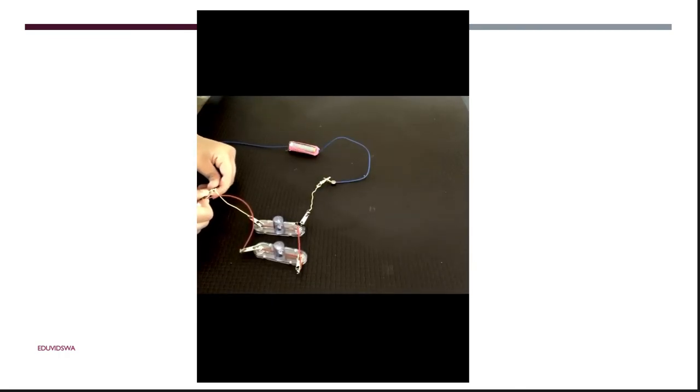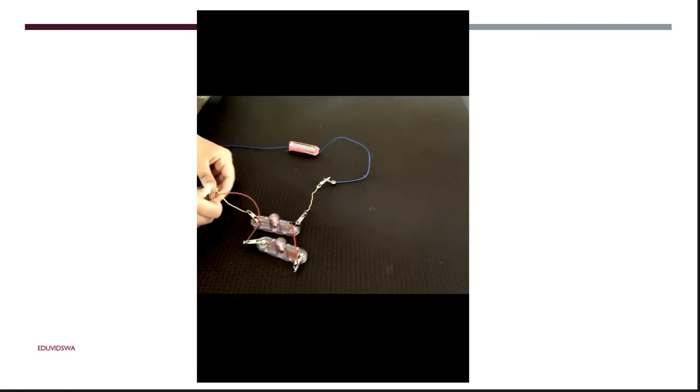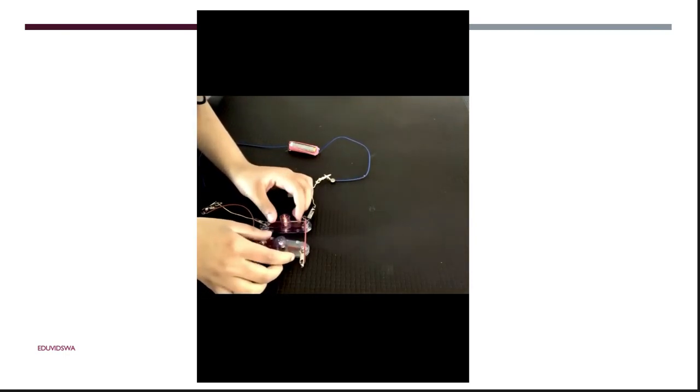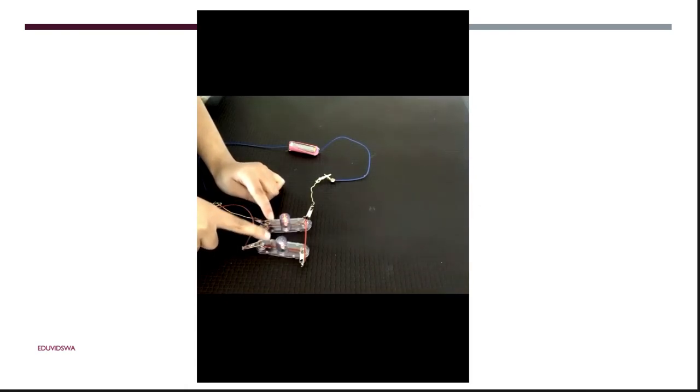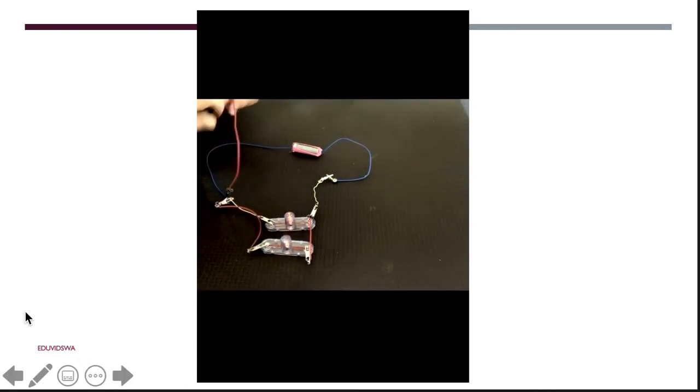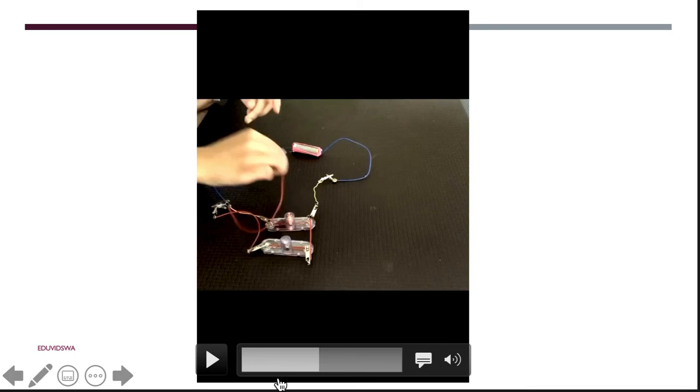I attached wires so that both light bulbs were part of the circuit. And you can see that the light bulbs turn on and they're very bright. This is because in parallel, light bulbs both get the full current instead of spreading out in series.